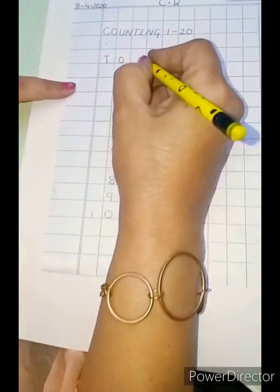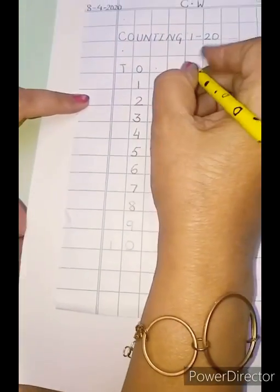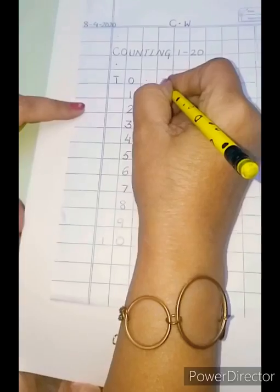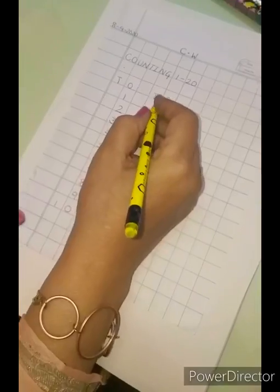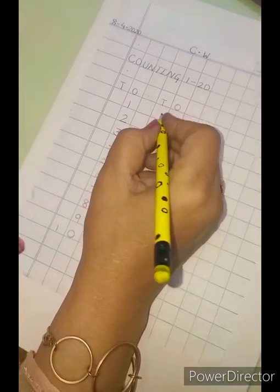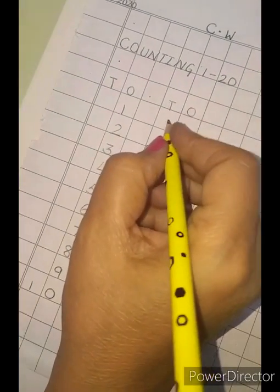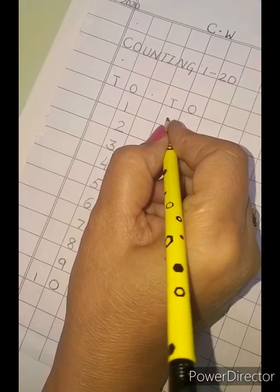Now, we start the second line. Put here one dot. Again, tens and ones. Now, 1. We will write second line 11 to 20, same pattern.